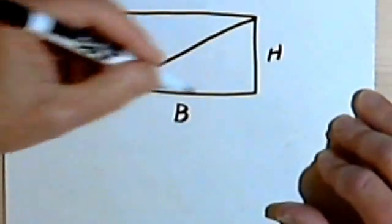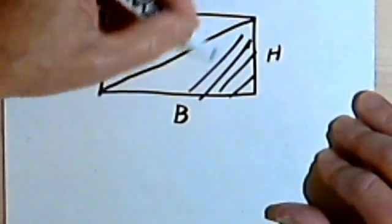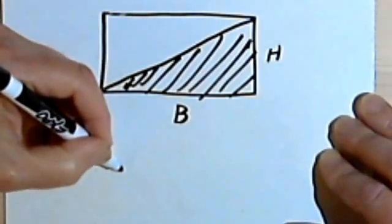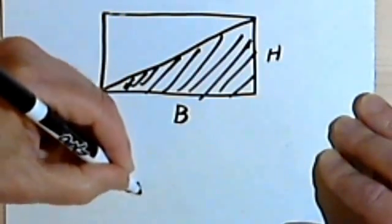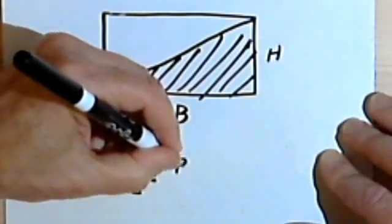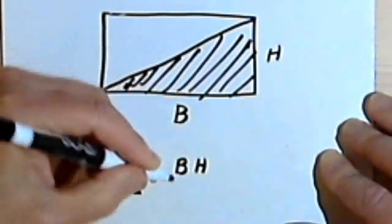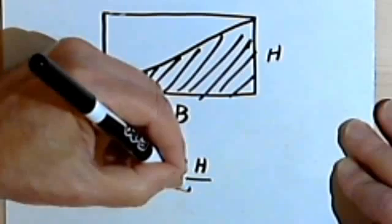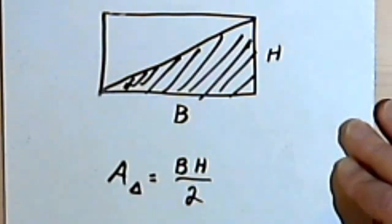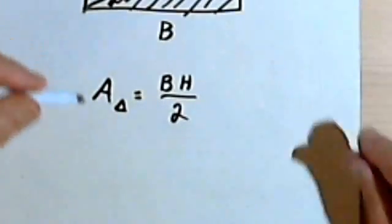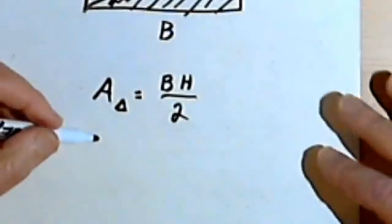The area of a triangle — just this part — is going to be the base times the height, like the length times the width, divided by two. And that's going to work for any triangle, as long as I know what its base and its height is.